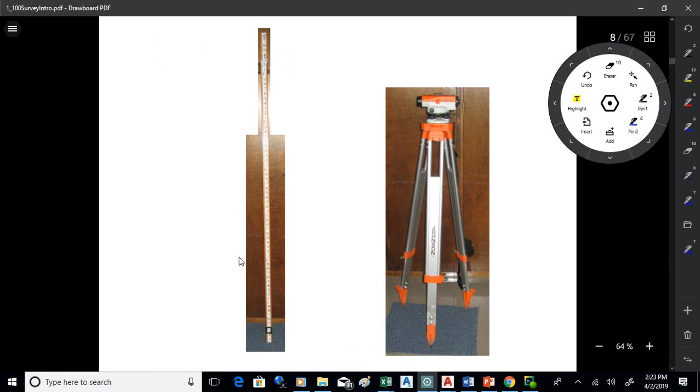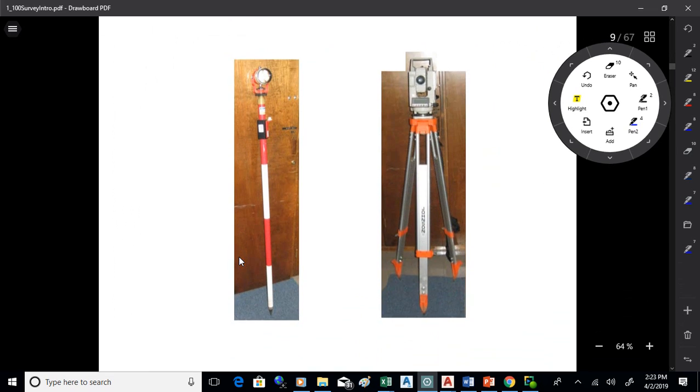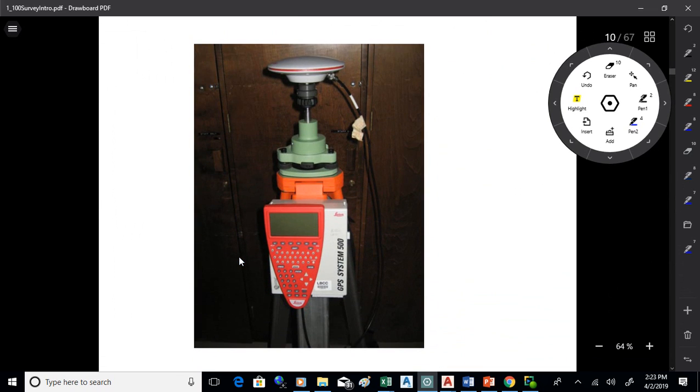There's a level with a rod that's used to measure elevation. There's a total station with a mirror, a prism there. You'll use that to measure distance and you can turn angles with that device. There's a survey level GPS. These are much finer instruments than what you might carry around in your pocket if you're out hiking or using your cell phone.